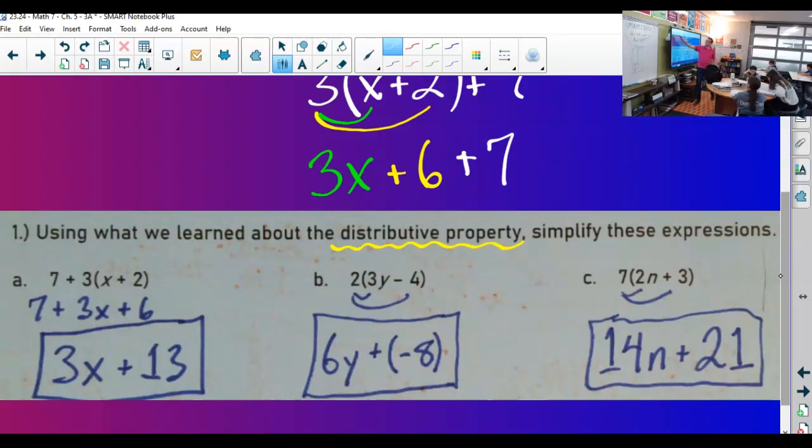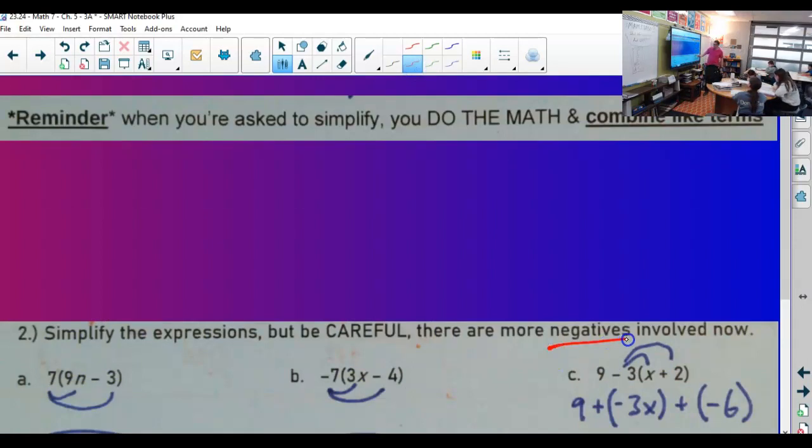So I could move that plus 7 to the end so I don't get confused. Now I can do my arrows. I'm going to use colors to help me out. What's 3 times x? 3x. What's 3 times 2? 6. Plus 7. Can I add 3x plus 6? No, not like terms. Can I add 6 and 7? Yes, which is how we get to 3x plus 13.